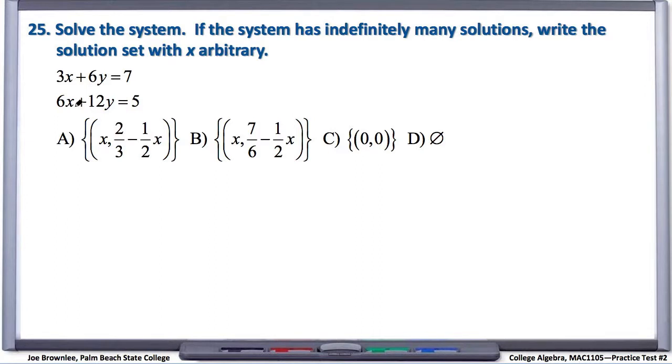Alright, so we have two equations in our system. The first is 3x plus 6y equals 7. And here we have 6x plus 12y equals 5 for our second equation.